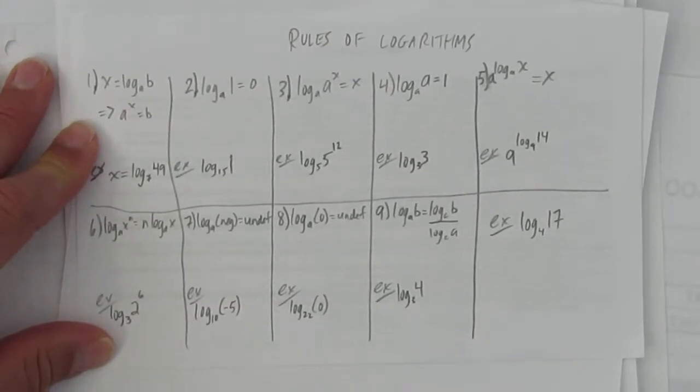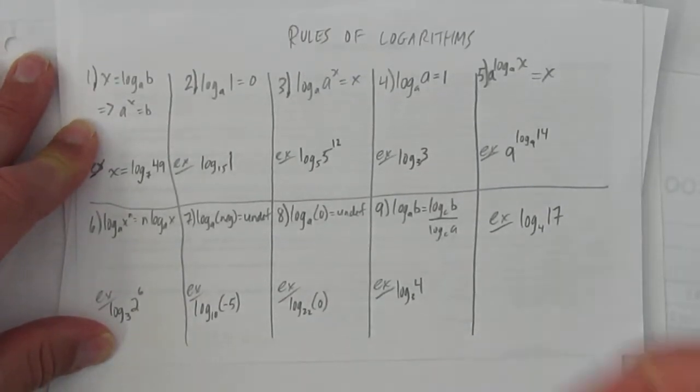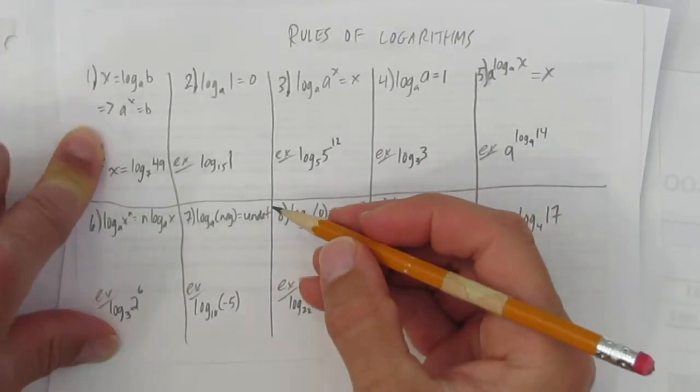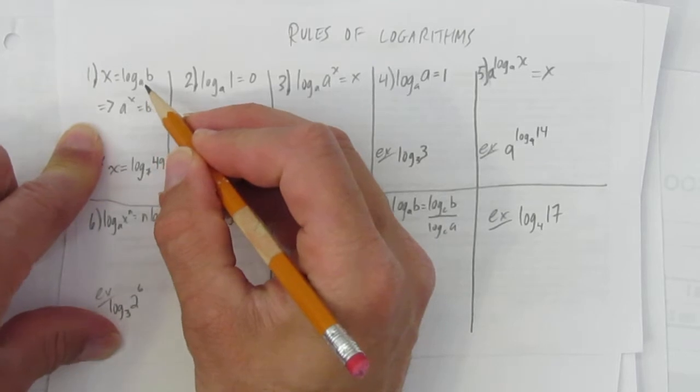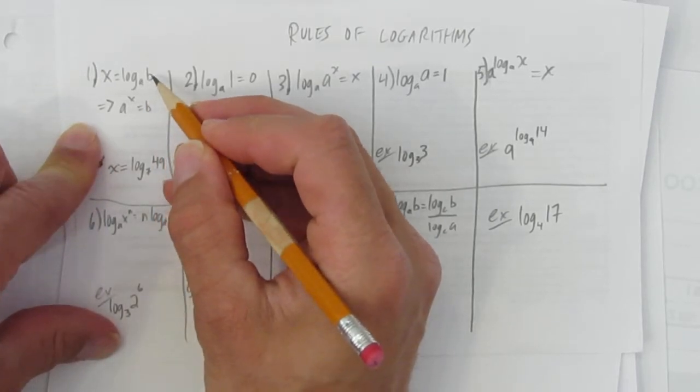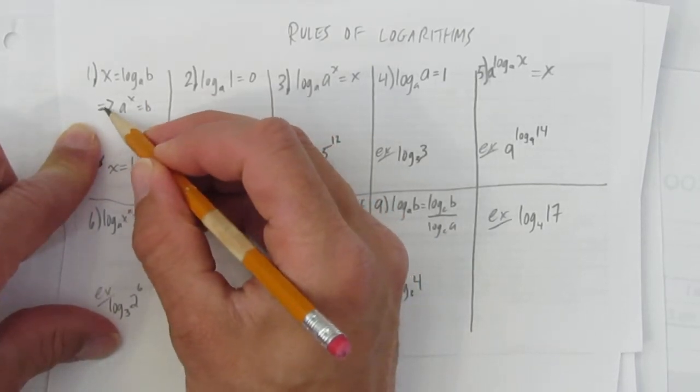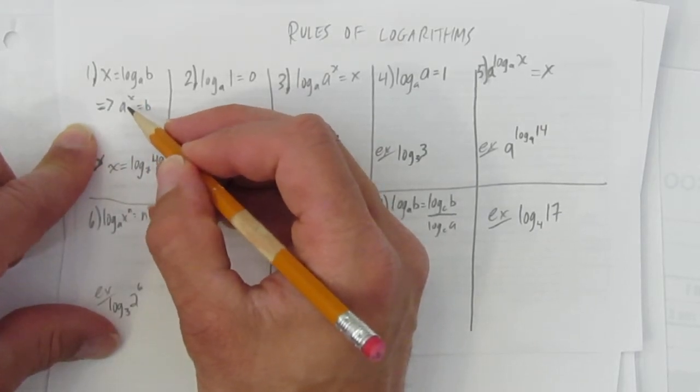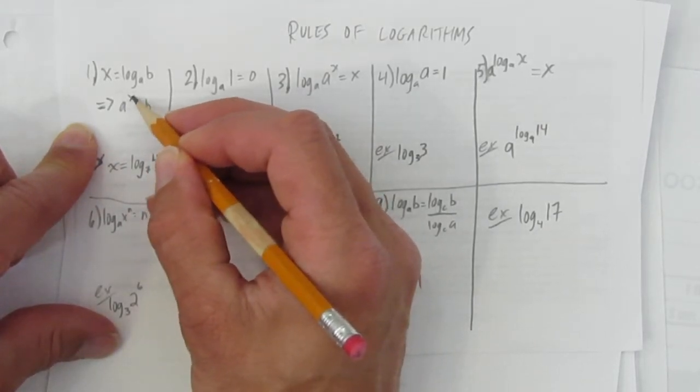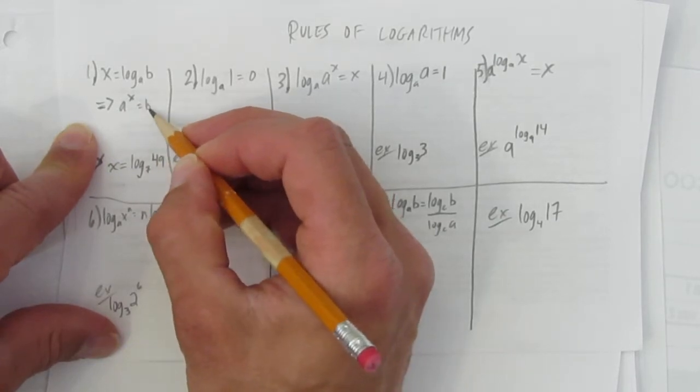Let's take a look at the rules of logarithms. There are a whole bunch of rules. I'll go through them. First rule is when you have x equals log base a of b, that implies, and you need an implies arrow here when you're converting, that implies that a is the base, x is the exponent, and b is the answer.